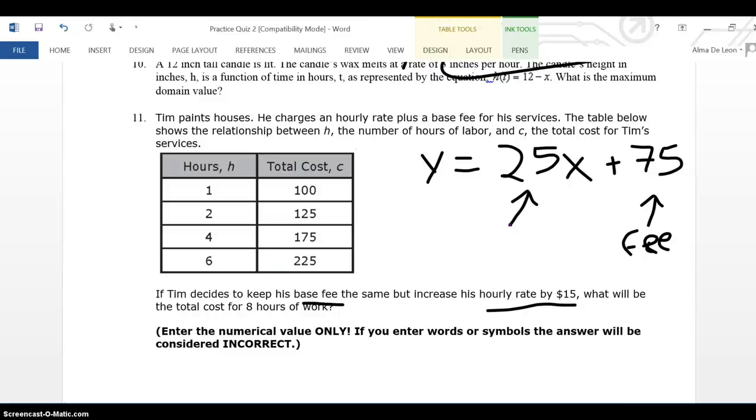We're trying to increase this by $15. So if I increase that by $15, 25 plus 15 is going to give me 40. I don't do anything to the 75. It doesn't say to change the fee. So my equation is y equals 40x plus 75.